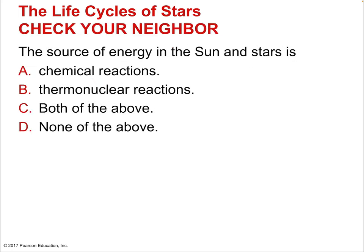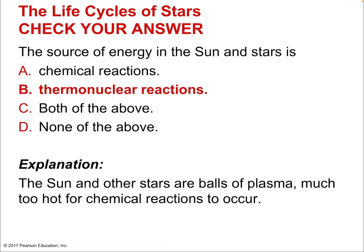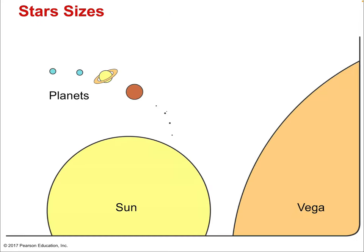The source of energy in the sun and stars is thermonuclear — fusion reactions occurring in the nucleus of atoms. Here's a fun size comparison: we have small terrestrial planets like Earth, then Jupiter, then our sun — dramatically bigger than Earth and noticeably bigger than Jupiter. But the sun is not a very large star.